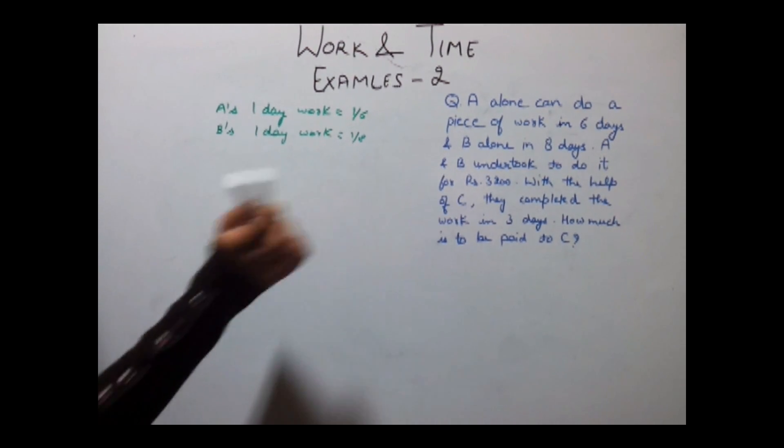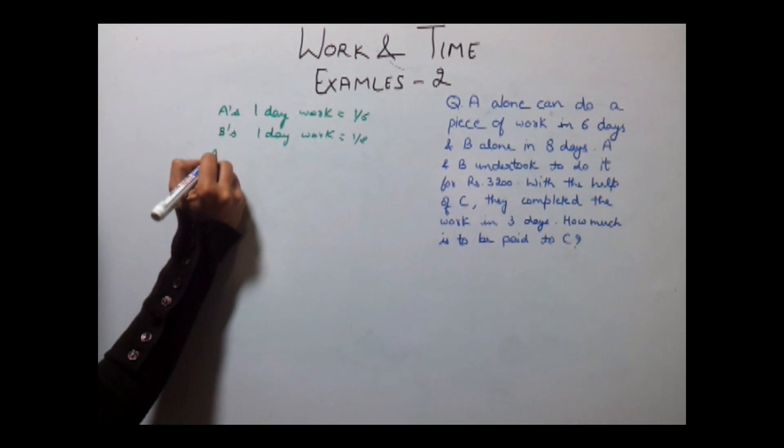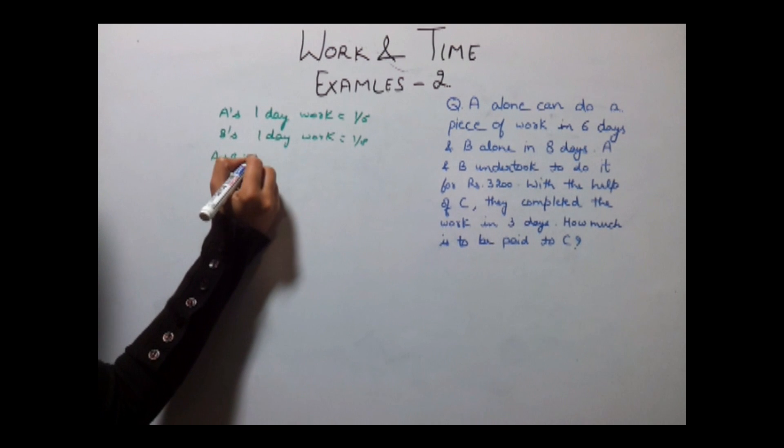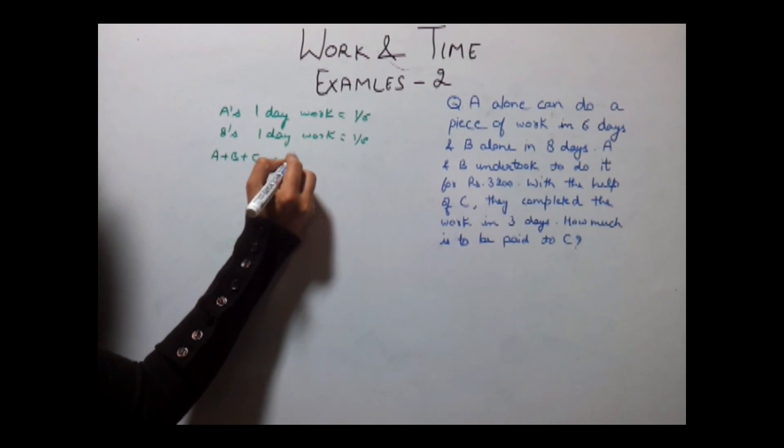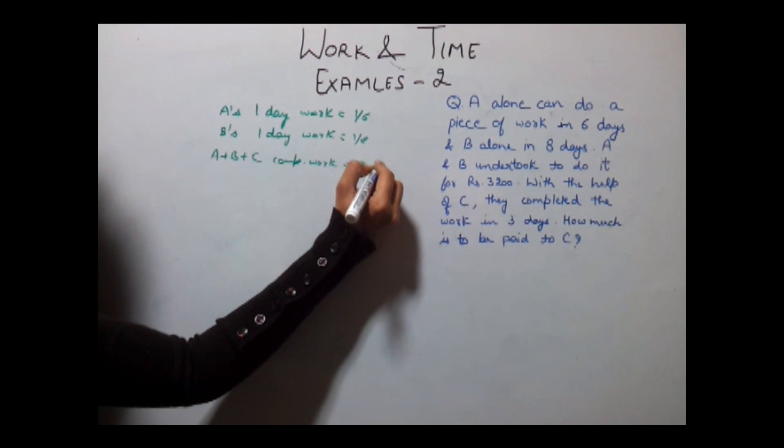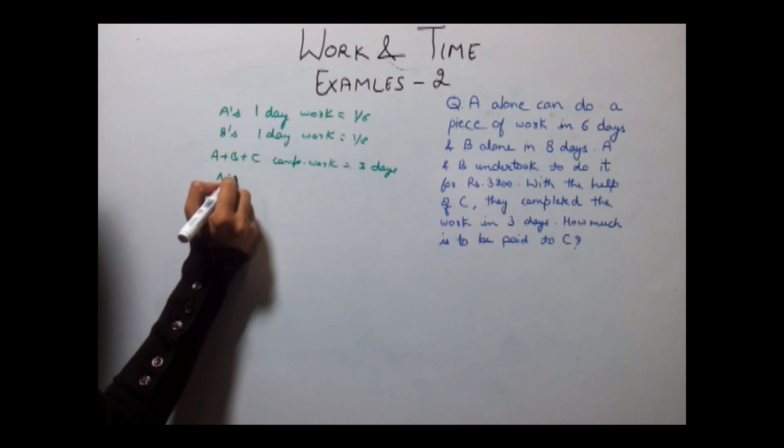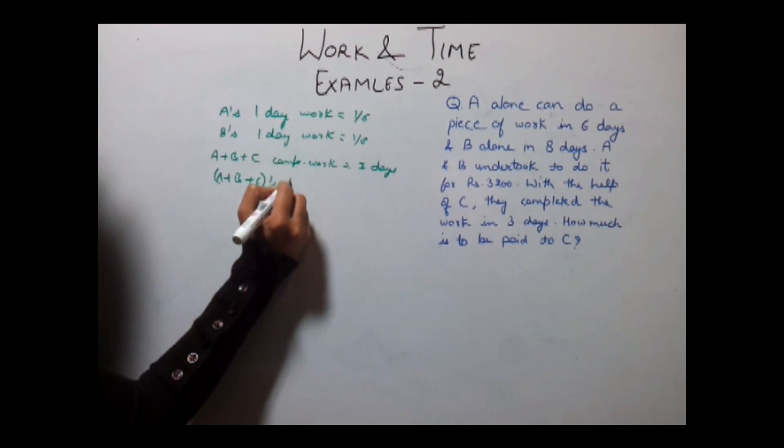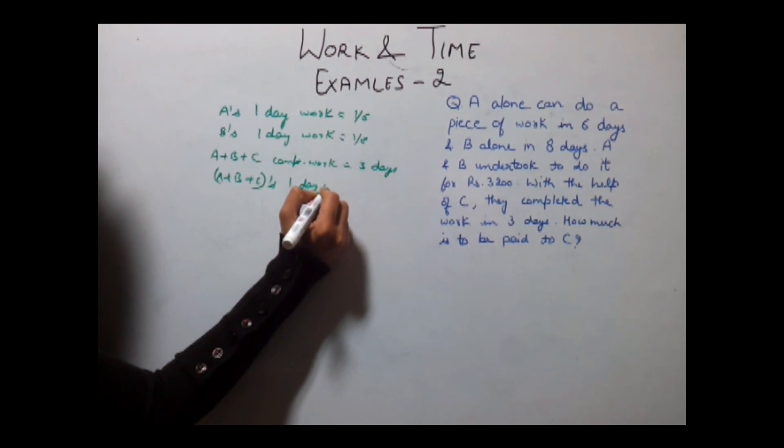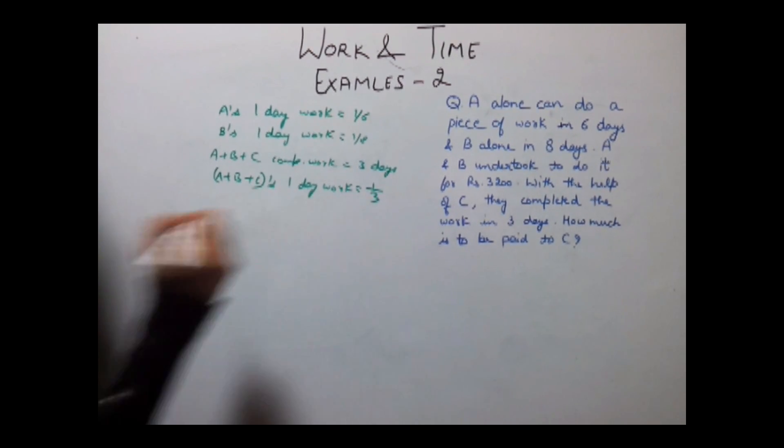Now it is given in the question that with the help of C, they completed the work in 3 days. That is A plus B plus C completed work in 3 days. So their one day work will be A plus B plus C's one day work is equal to 1/3.